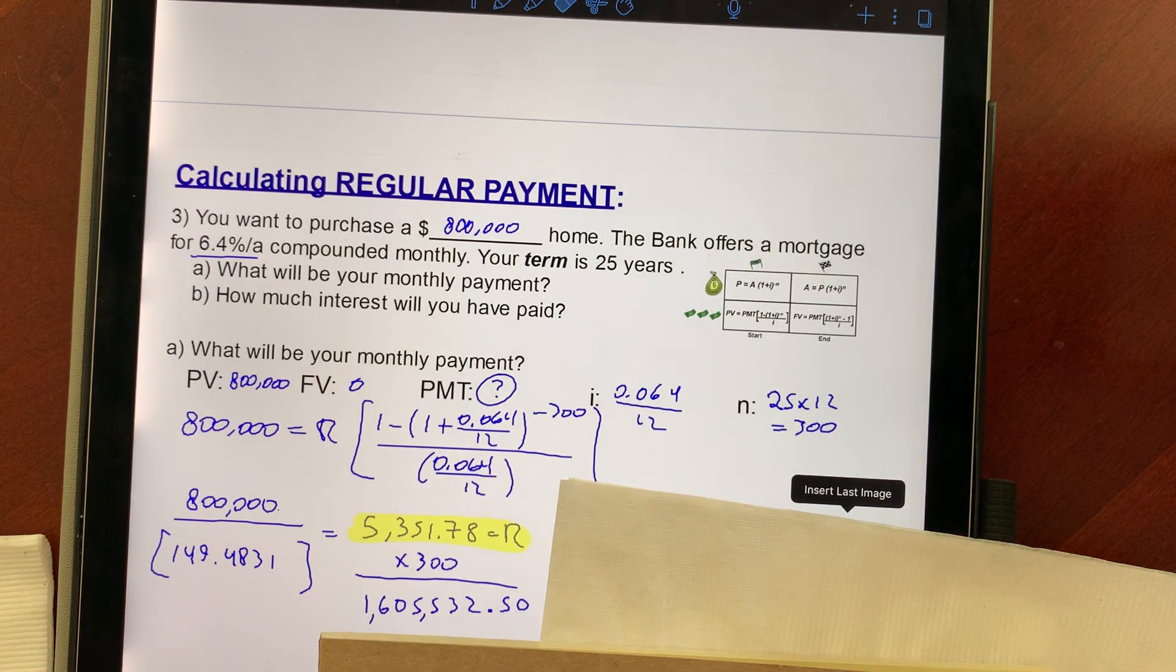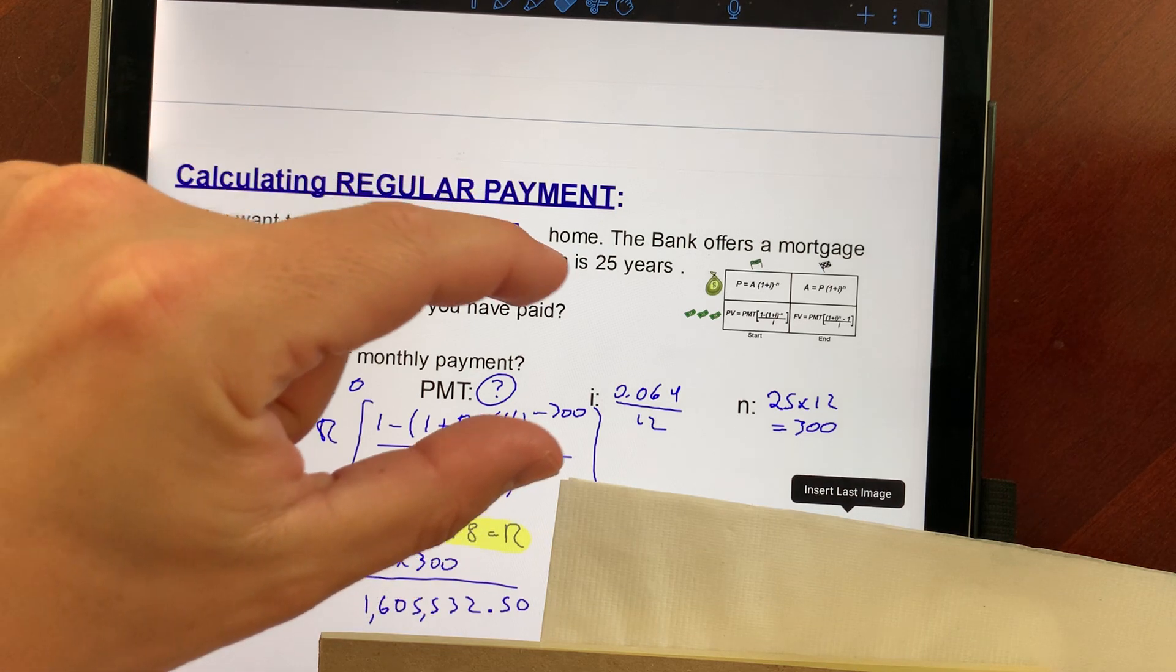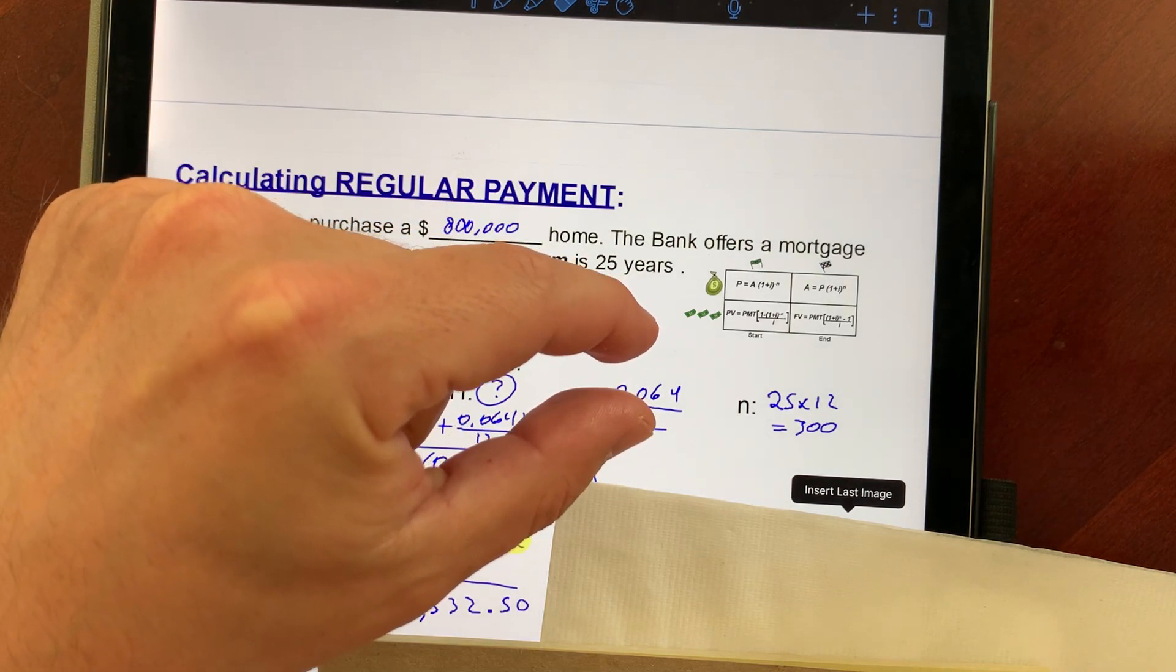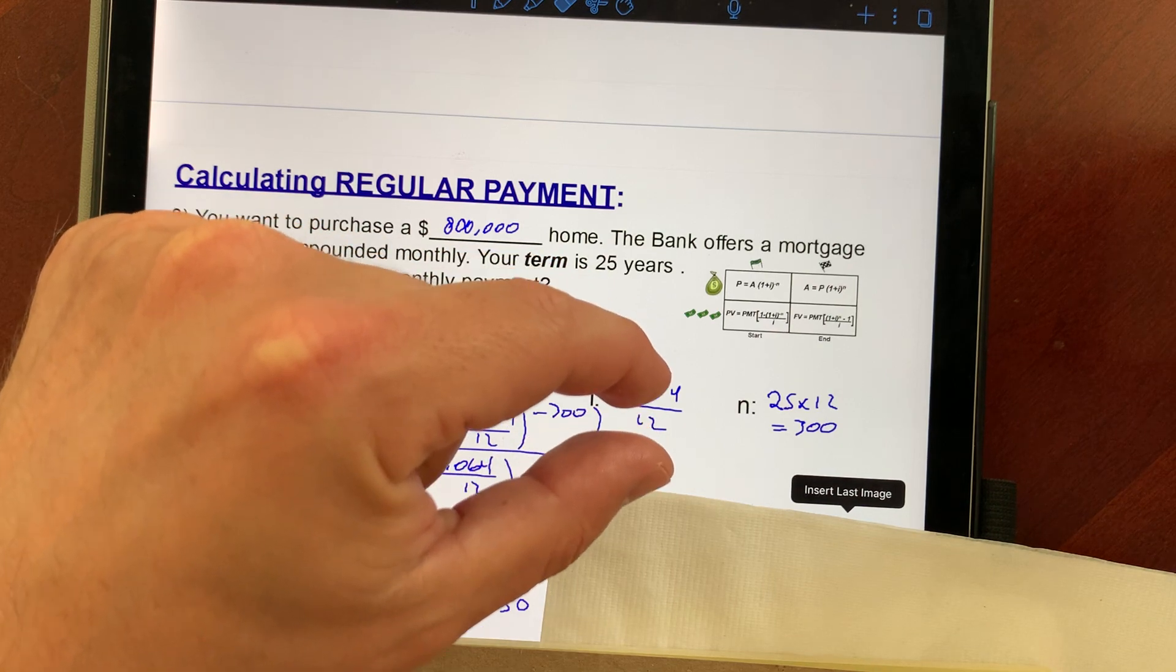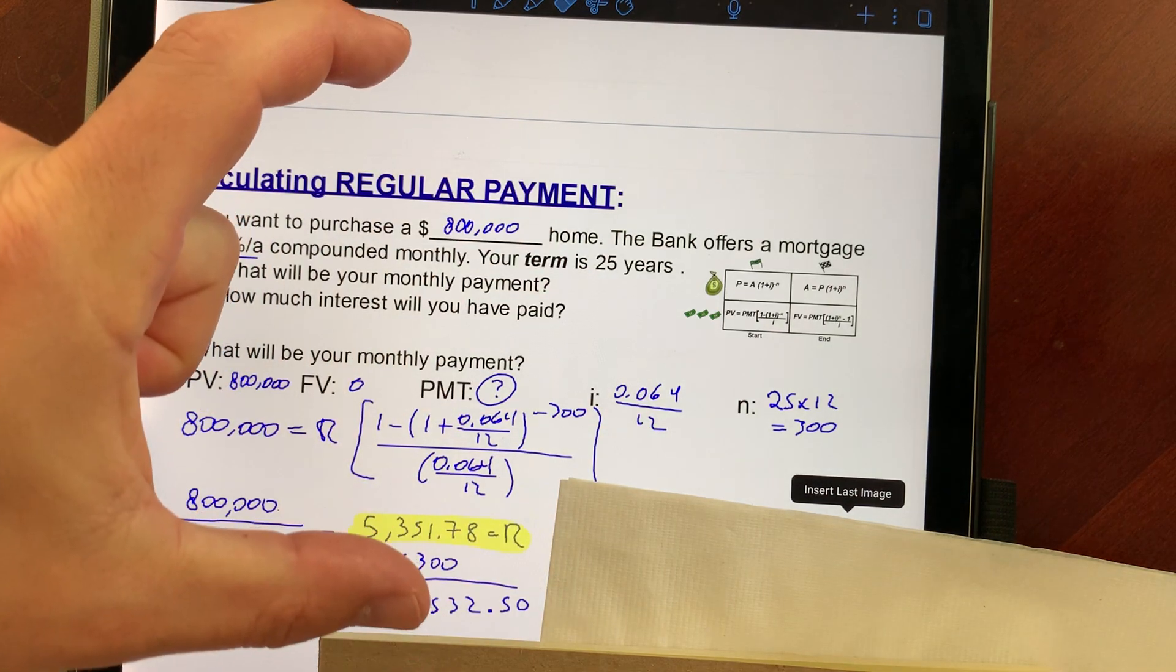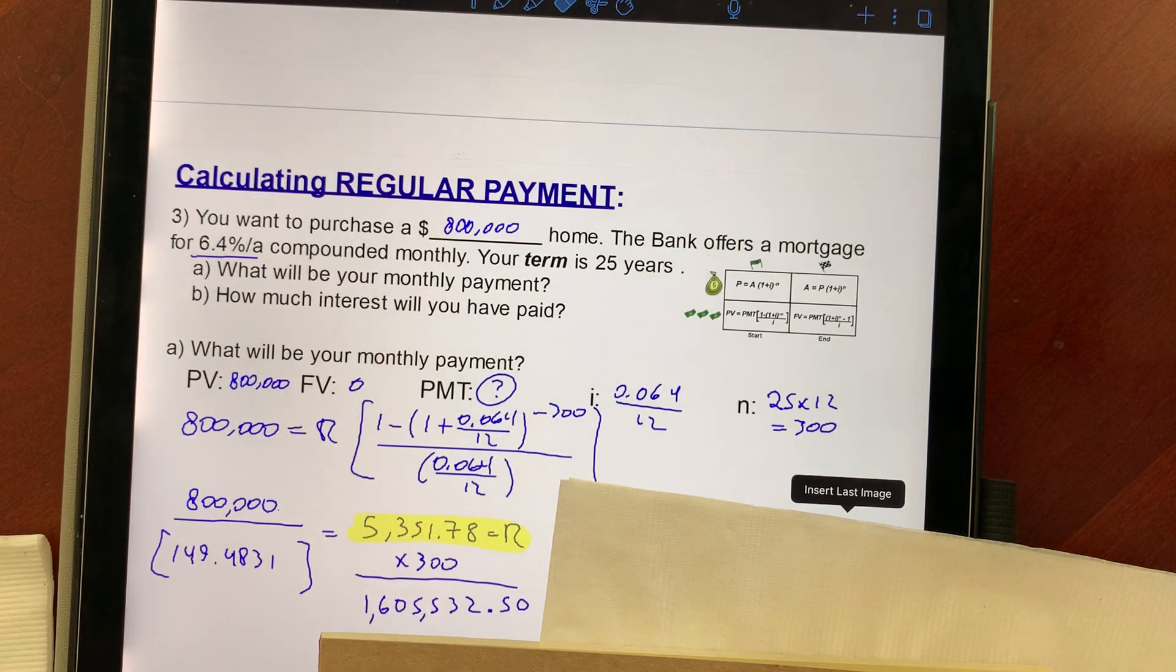When we look at an amortization table, we're going to see that we pay a crap load of interest at the very beginning, because that's when you owe the full $800,000. As it goes down, but near the end, you owe less and less. The interest is very small. It's still the same percentage, but a percentage of a small number is small. A percentage of a big number is a big number.